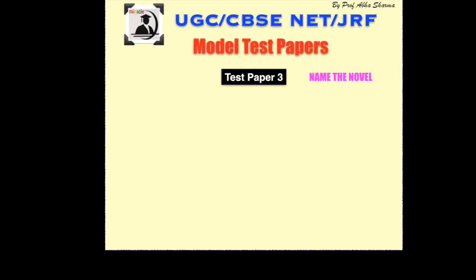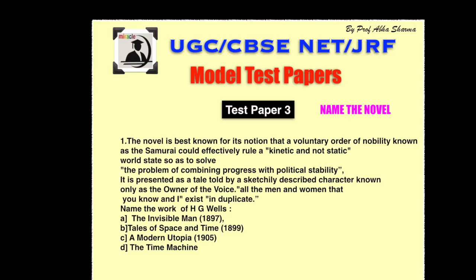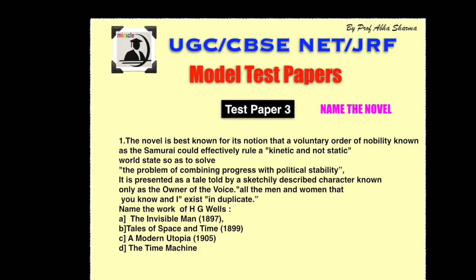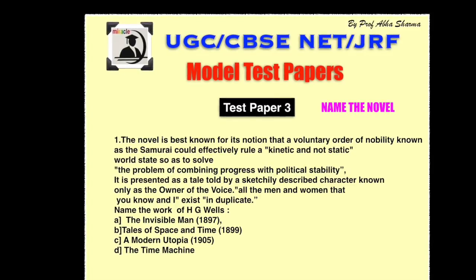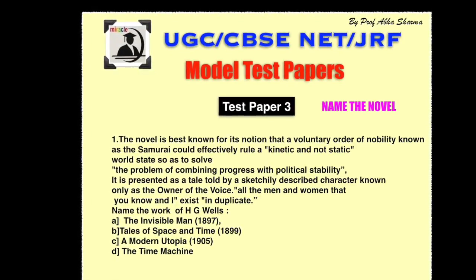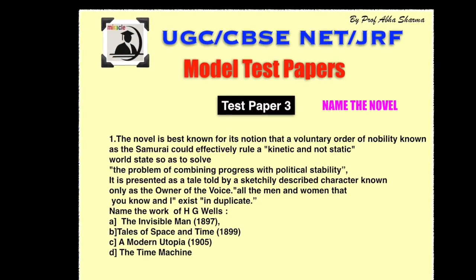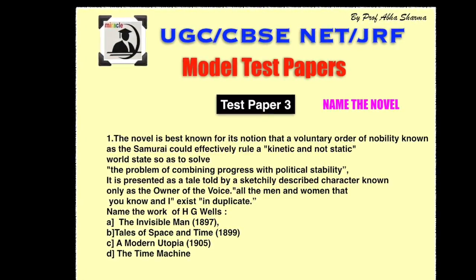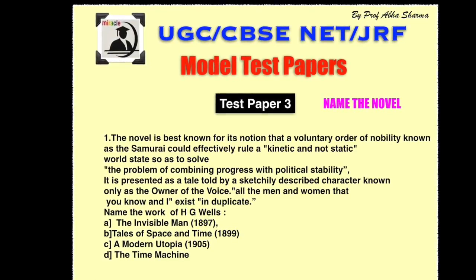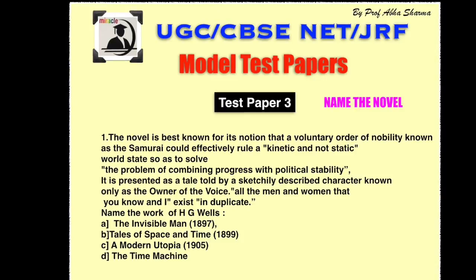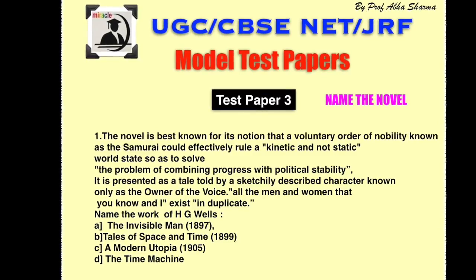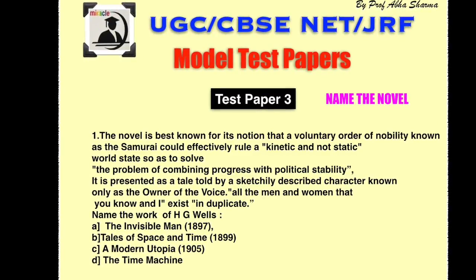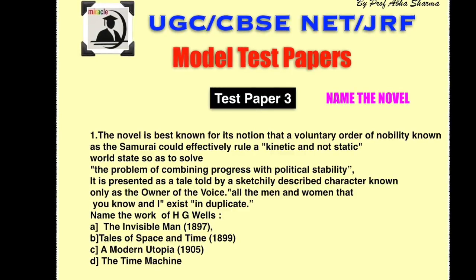Question number one. The novel is best known for its notion that a voluntary order of nobility known as the samurai could effectively rule a kinetic and not static world state, so as to solve the problem of combining progress with political stability. It is presented as a tale told by a character known only as the owner of the voice. All the men and women that you know exist in duplicate. Name the work of H.G. Wells. Options: The Invisible Man, Tales of Space and Time, A Modern Utopia, The Time Machine.